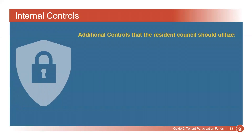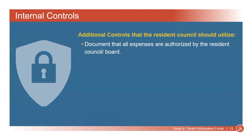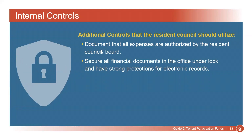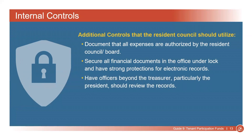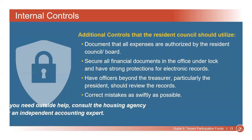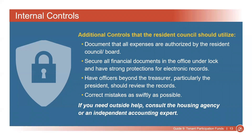Additional controls that the Resident Council should utilize are to document that all expenses are authorized by the Resident Council and Board; secure all financial documents in the office under a lock and have strong protections for electronic records; have officers beyond the Treasurer, particularly the President, review the records; and correct mistakes as swiftly as possible. If you need outside help, consult the housing agency or an independent accounting expert.